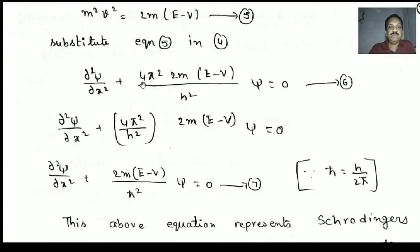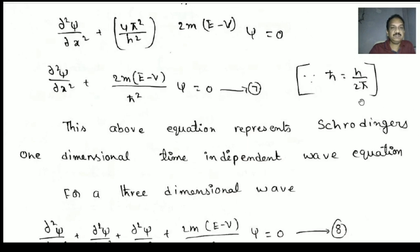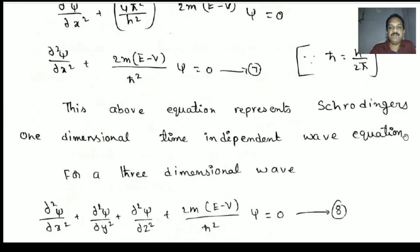Writing separately with 4π²/h², and using ħ = h/2π according to Bohr, we get ∂²ψ/∂x² + (2m(E−V)/ħ²)ψ = 0. This is equation number 7, representing Schrödinger's one-dimensional time-independent wave equation.